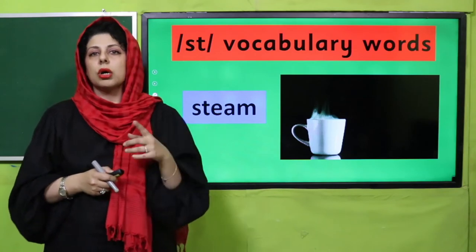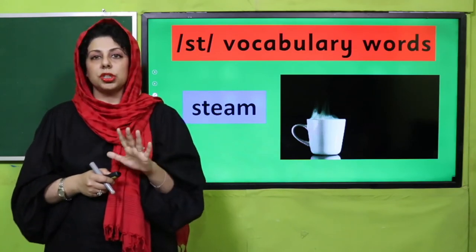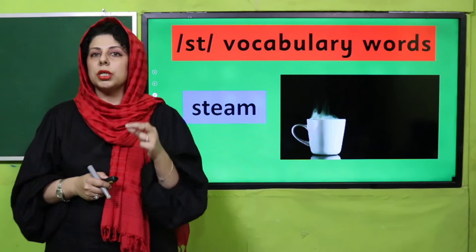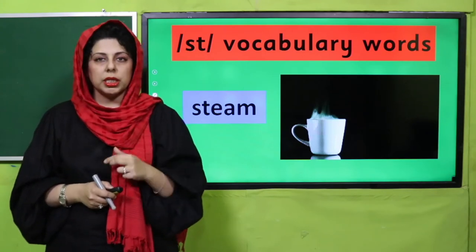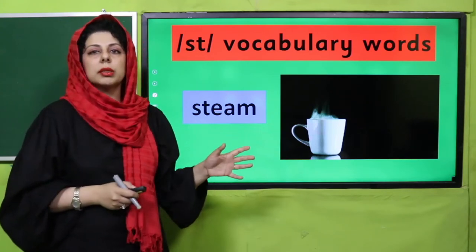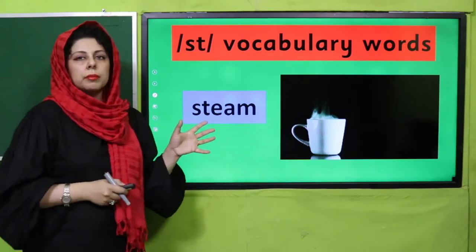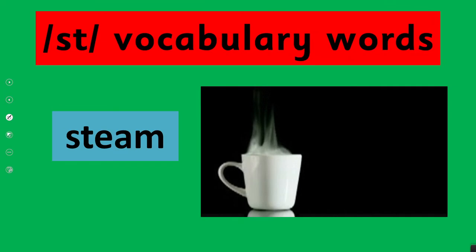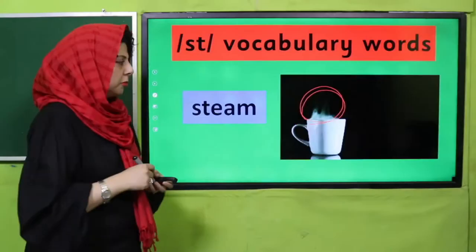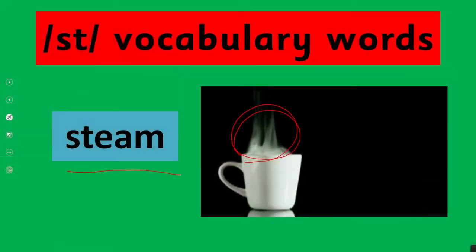Aaj ki sound ke baare mein mein aapse share karungi. So what do you see here on the screen? This is a hot cup of tea or milk probably. Yeh jo garam garam dhuwaan hota hai, isko English mein kehte hain: steam. Teachers, make sure they are pronouncing it multiple times — steam.